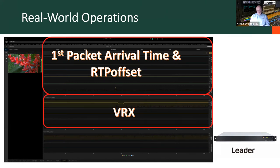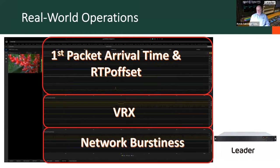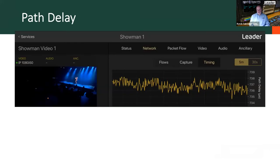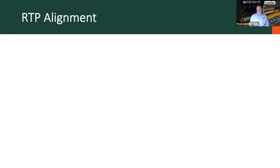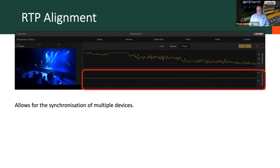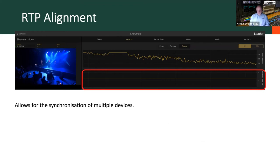Additional measurements on the LV5440 include first packet arrival time and RTP offset, VRx, and network burstiness. Path delay is the difference between the timestamp of packets from the sender and the time they arrive at the receiver — all linked to PTP, so we can see what's going on across the network. RTP alignment allows synchronization of multiple devices in a multi-IP stream environment; ideally this should be zero, but in this example there is an offset of 33.3 microseconds.